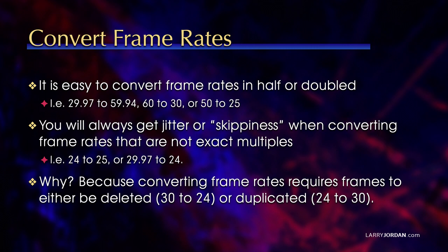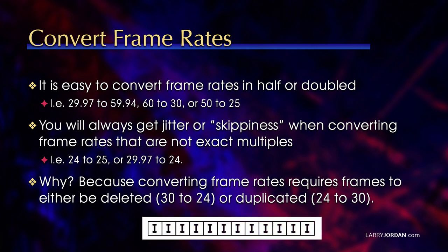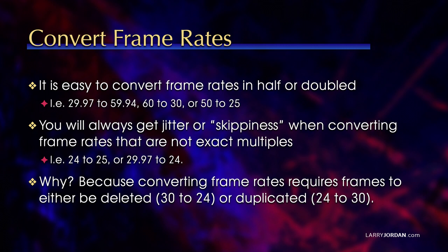However, we will always get jitter or skippiness when we're converting frame rates that are not exact multiples — for instance, 24 to 25, or 29.97 to 24. Why? Because converting frame rates requires frames to either be deleted — if we're going from 30 to 24, we delete every fifth frame — or duplicated — if we're going from 24 to 30, we double the playback of every fourth frame. Think of that strip of film. Frames are entities. There's nothing moving; I just have a series of still images. If I'm changing the frame rate, the only way to do that is to drop a frame or add a frame, which means that stuff is going to start to get jittery.